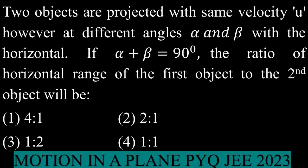Two objects are projected with the same velocity u, however at different angles α and β with the horizontal. If α + β = 90°, the ratio of the horizontal range of the first object to the second will be...